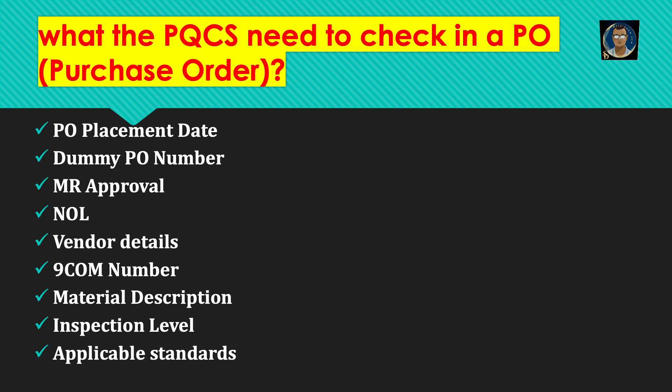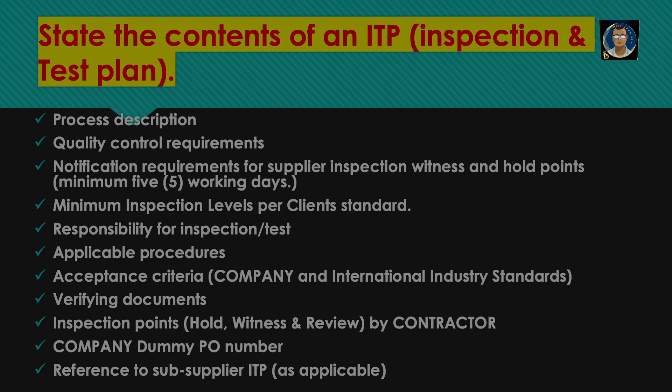What does PQCS need to check in a PO or purchase order? PO placement date, dummy PO number, MR approval, no objection letter, vendor details, 9com number, material description, whether the inspection level is correct, and whether applicable standards are mentioned.